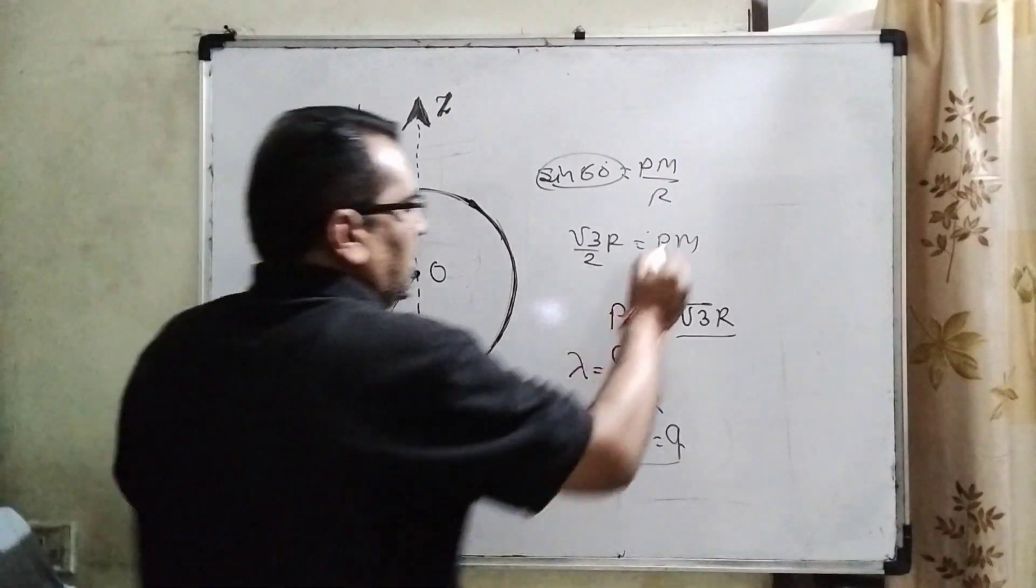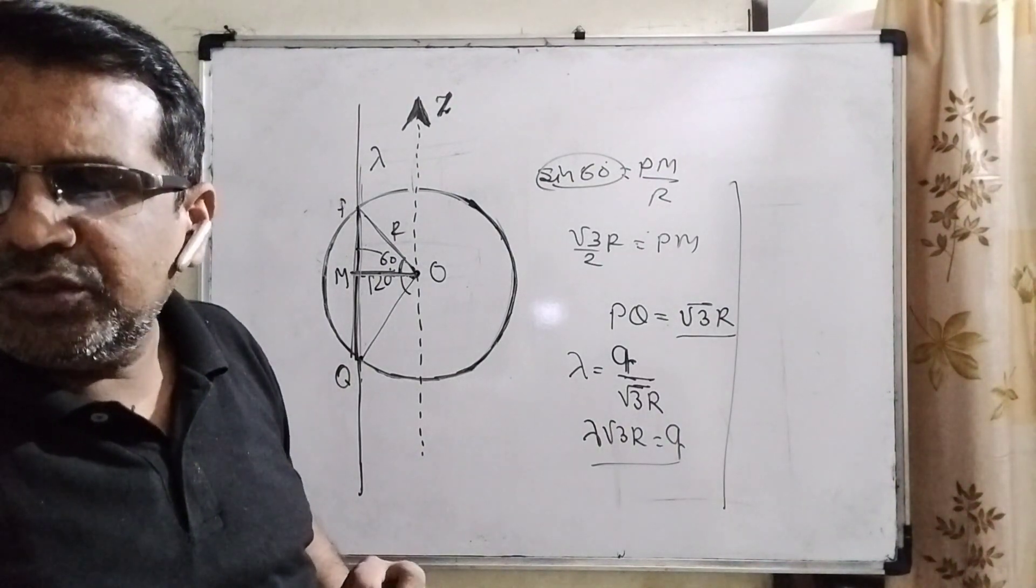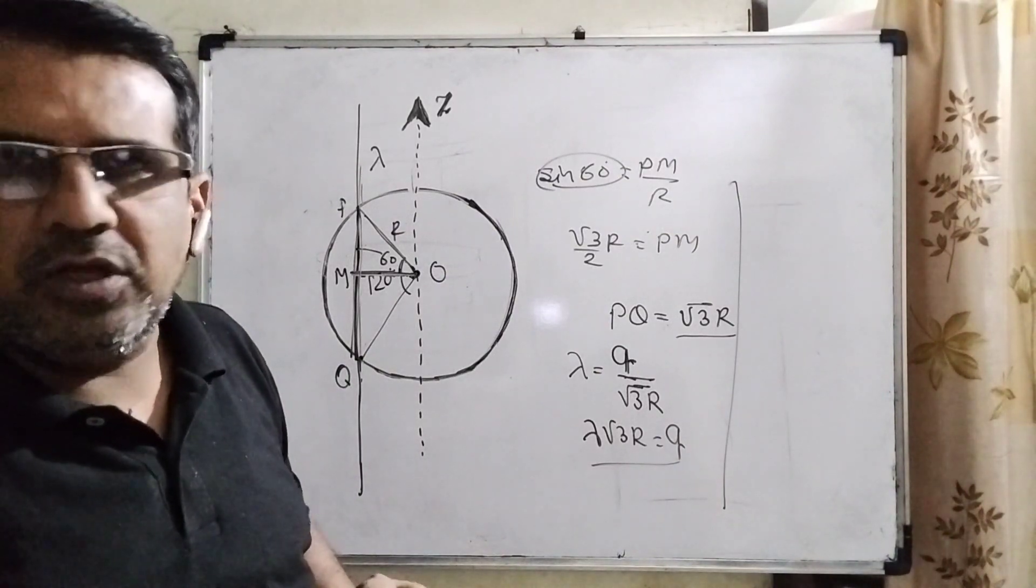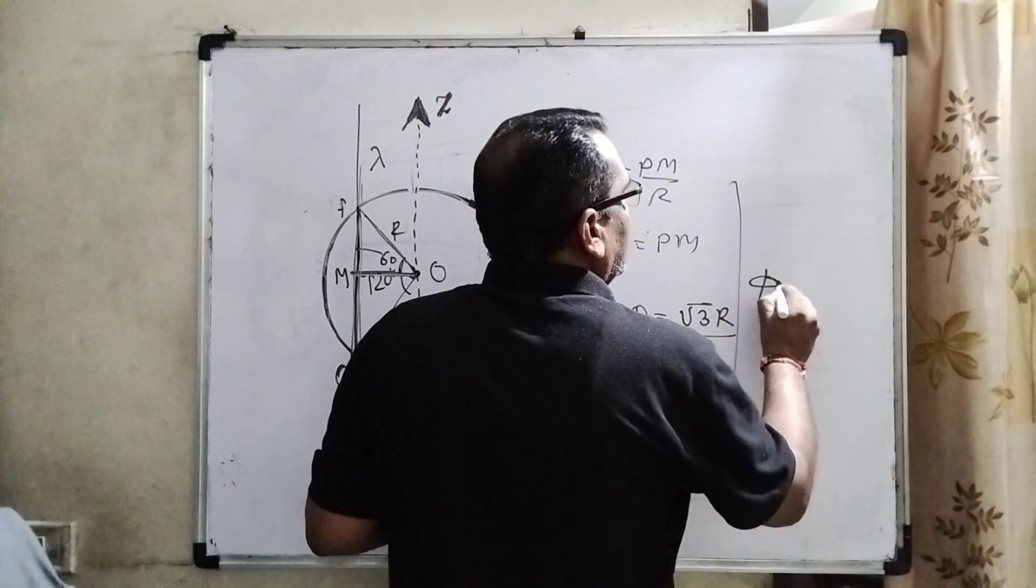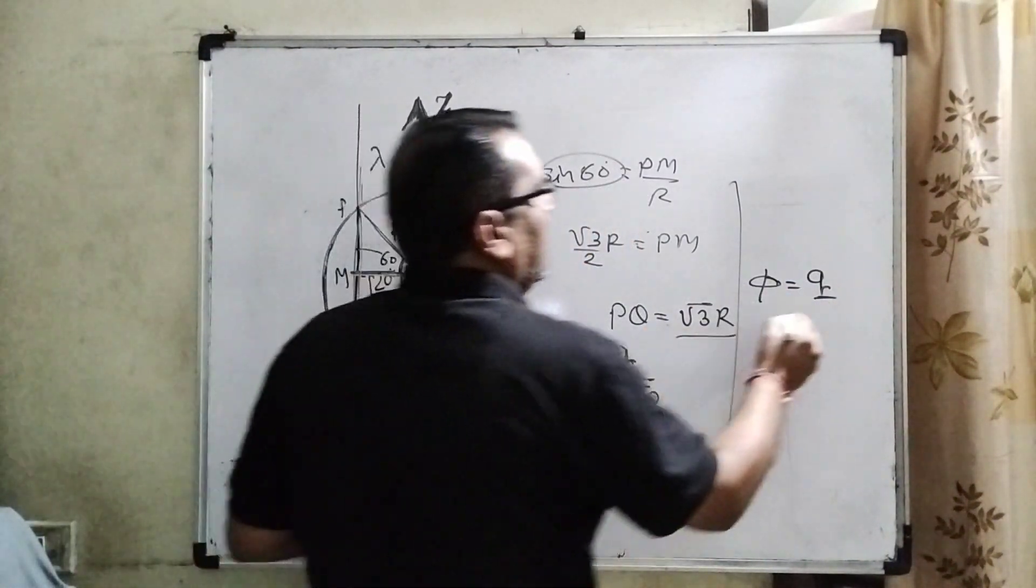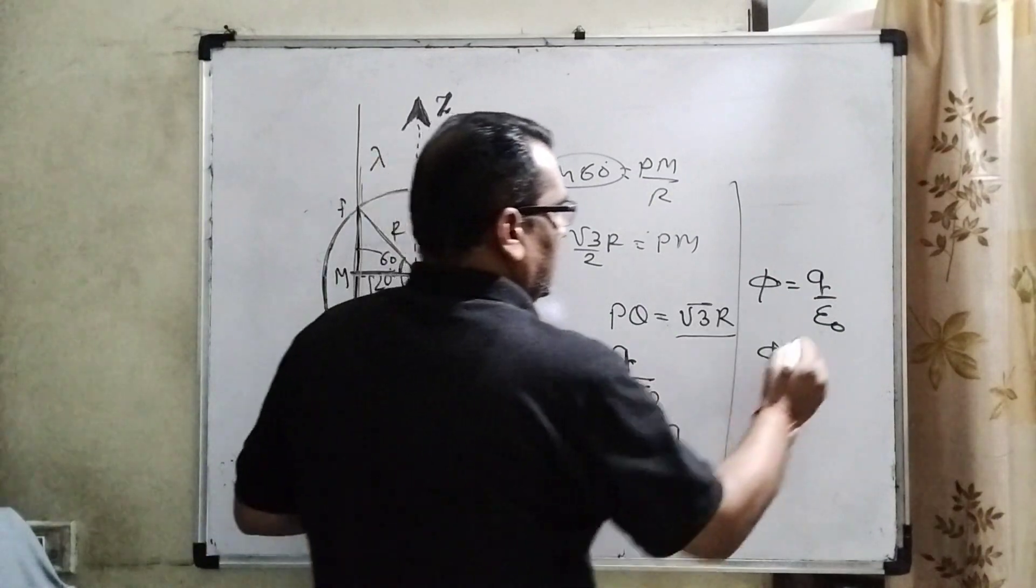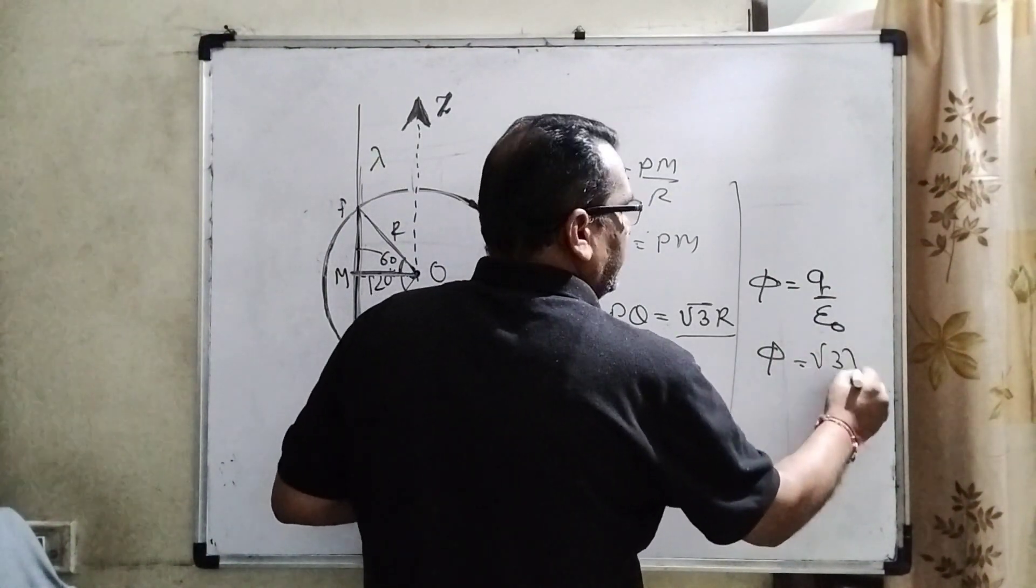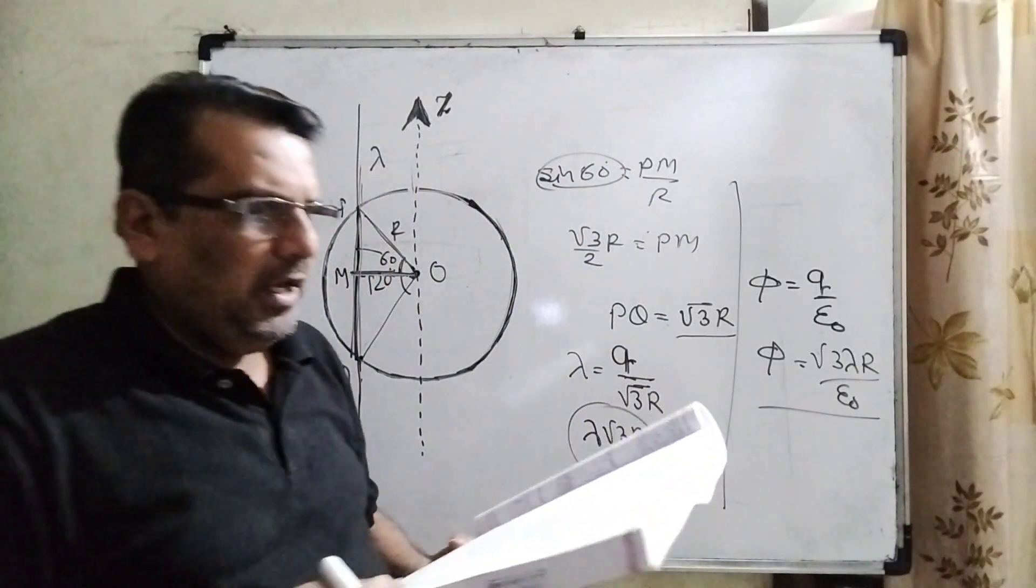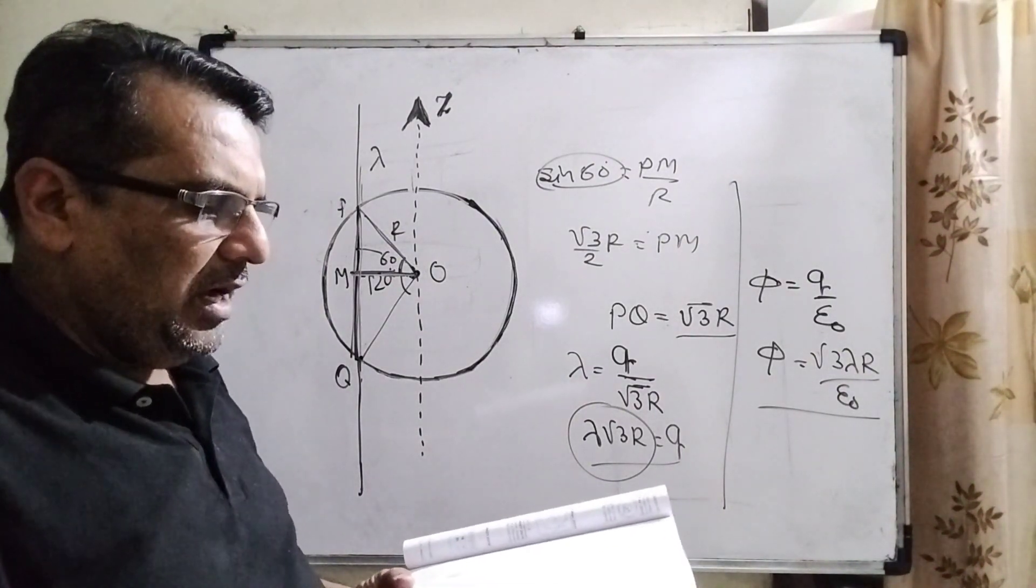Now for the first option, the electric flux through the shell is root 3 R lambda over epsilon zero. You know that very well, flux equals total charge present on the closed body divided by epsilon zero. Then what is the value of Q? You can see that this is Q: root 3 lambda R over epsilon zero. Therefore, first option A is correct. The electric flux through the shell is root 3 R lambda over epsilon zero.